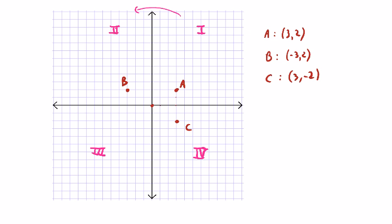So point A is in quadrant 1, point B is in quadrant 2, and there are no points yet in quadrant 3 that are given, and point C is in quadrant 4.